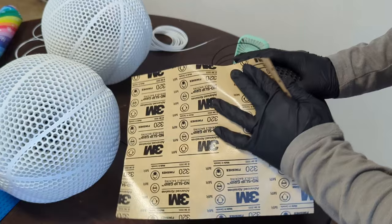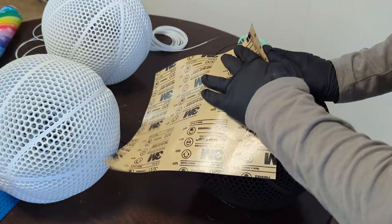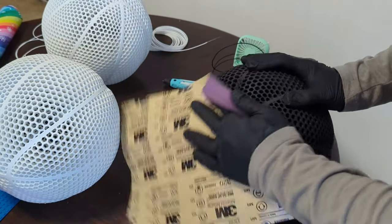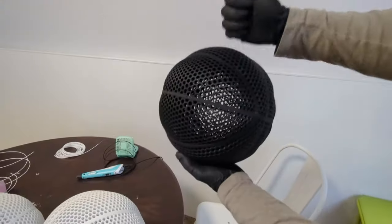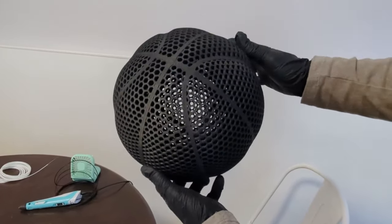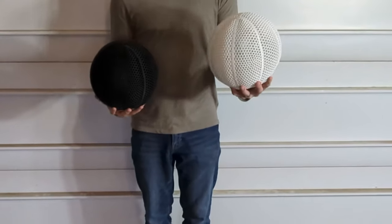I made sure to sand everything when I was done to get rid of any bumps or anything that would affect the bounce when I tested them out. So this is the Flex PLA when it's all done. This is the Super PLA Plus, and now we're going to see how these two compare when they bounce.